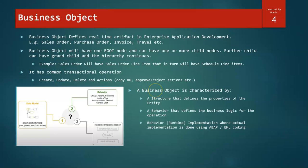What is the business object? Let us first understand. The business object defines a real-time artifact in the enterprise application development. For example, we have sales order, invoice, travel, purchase requisition. Everything that has a functionality behind it is defined as a business object. Now a business object will have one root node and can have multiple child nodes. Further, the child nodes can have a grandchild as well. So this hierarchy continues. It is a hierarchical order that business object consists of.